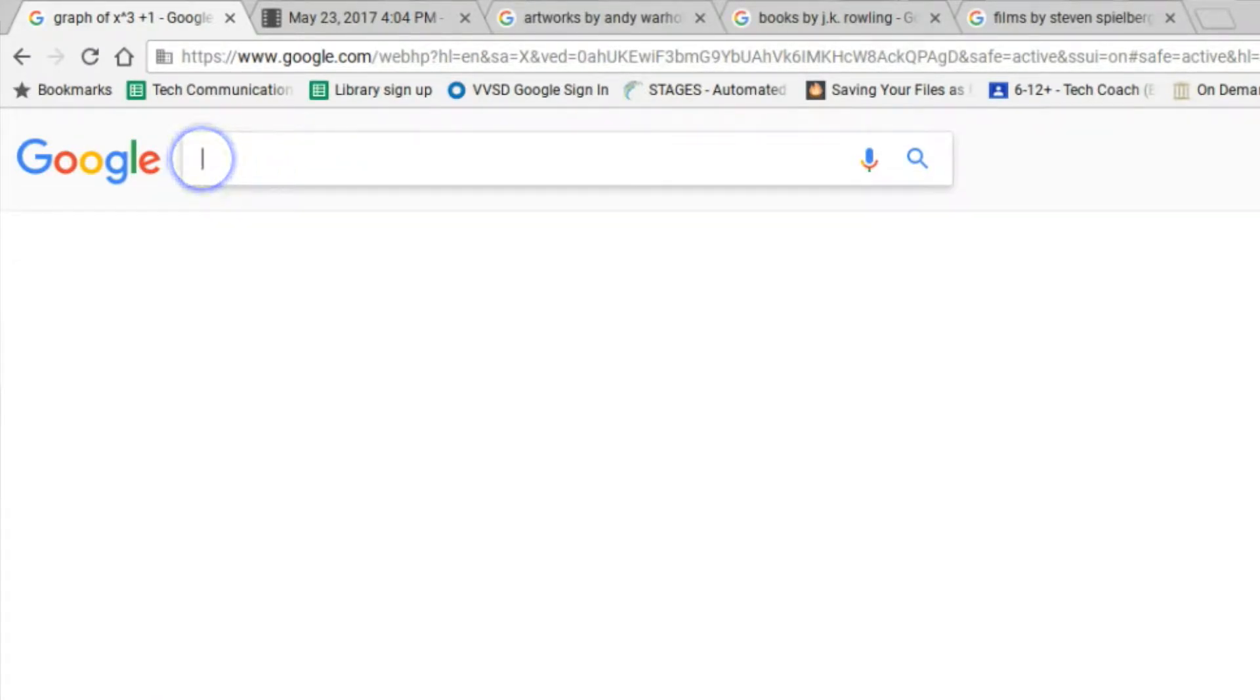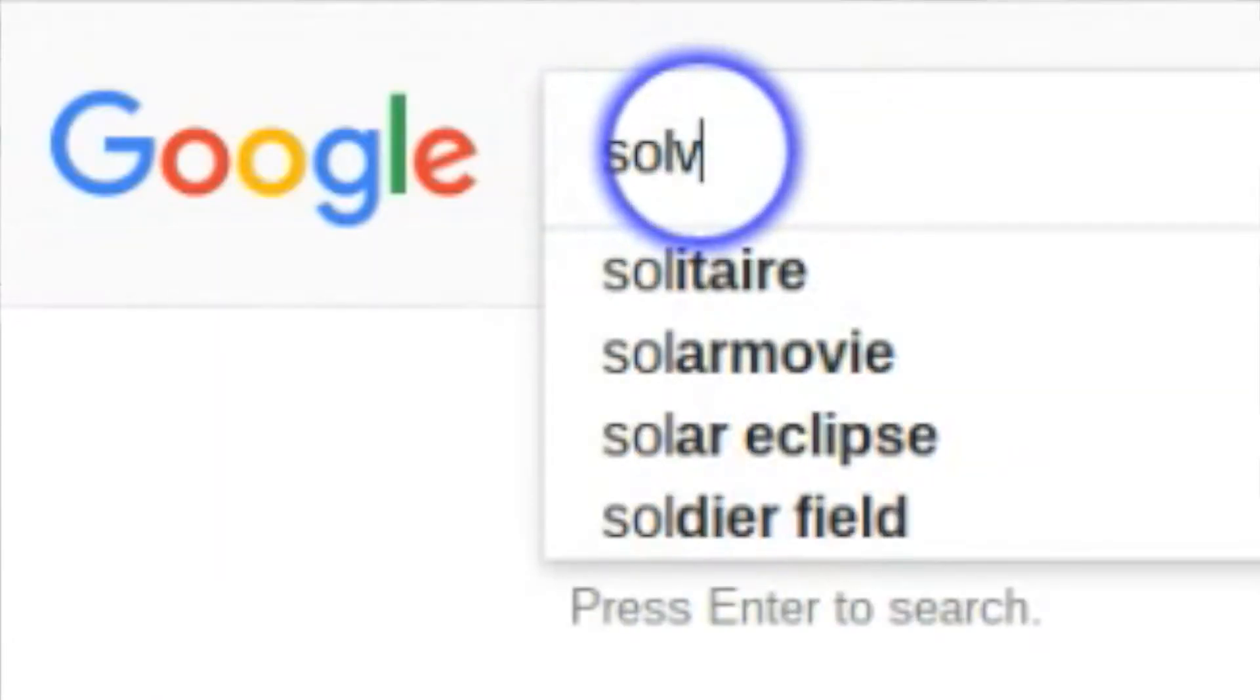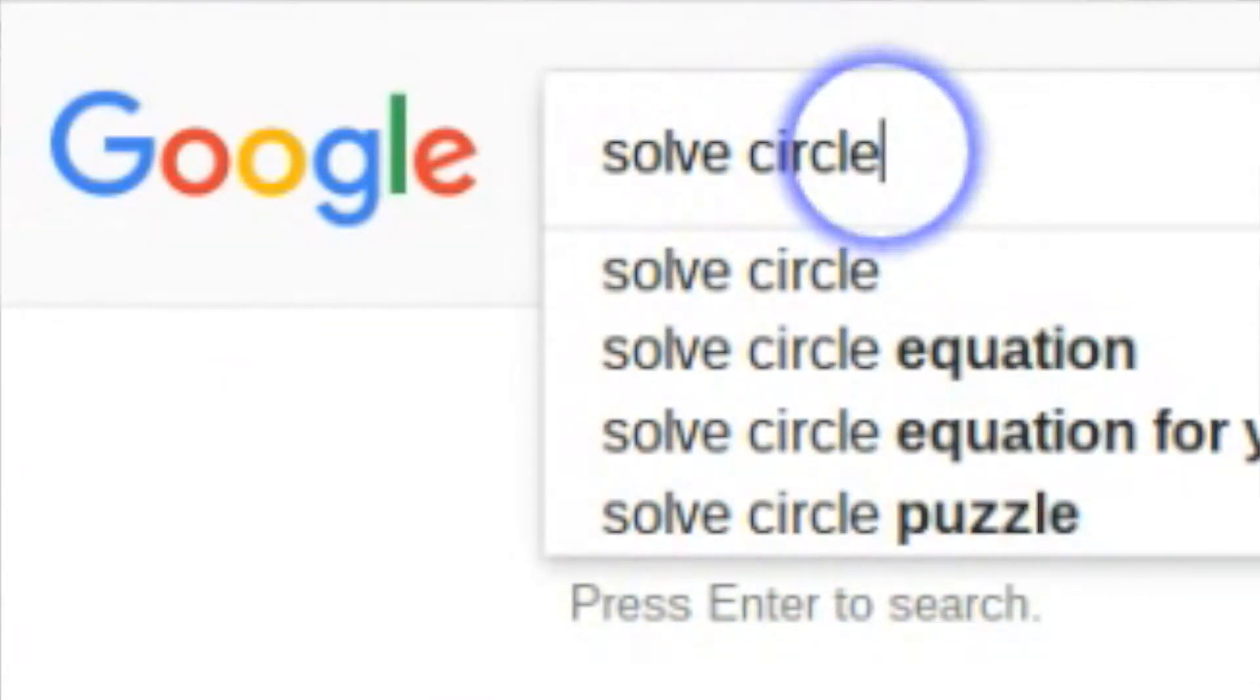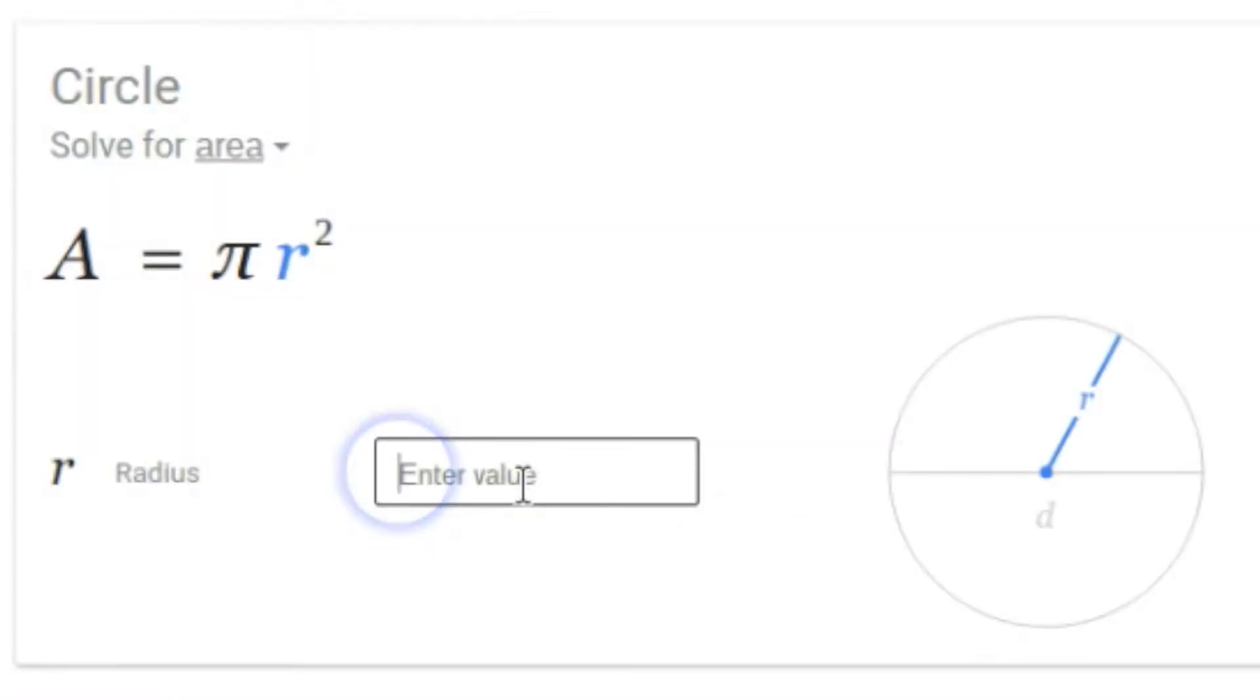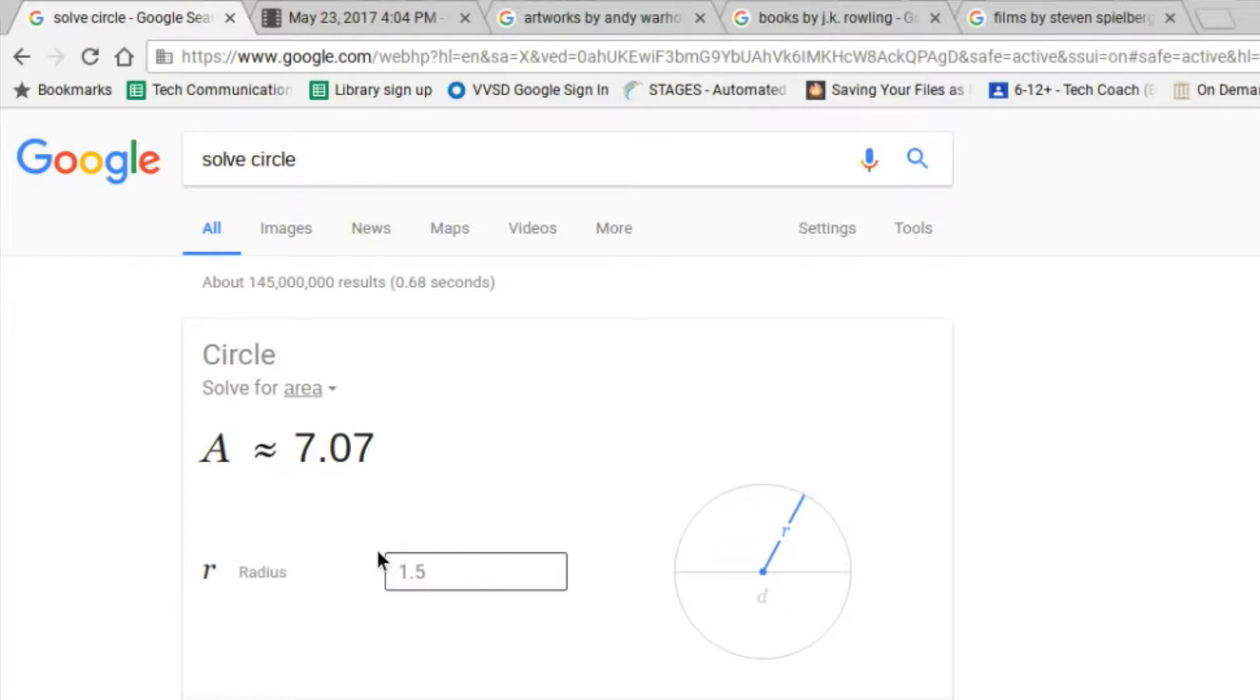How about if we need to know the area of a shape? So if we say solve circle, we're solving for area and you can simply enter a value. So if the radius is 3, then the area of the circle is 28.27. If the radius is 1.5, then the area is 7.07.